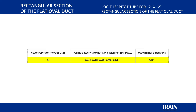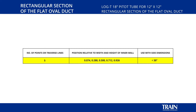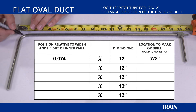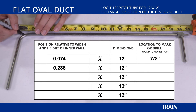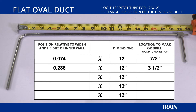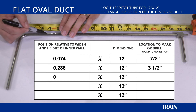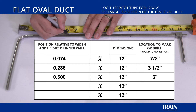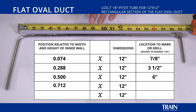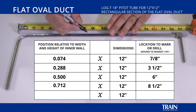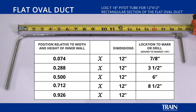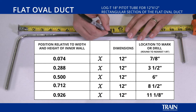The first point to mark for a 12 inch duct is 0.074 times 12 inches, which results in seven eighths on the pitot tube. The second factor is 0.288, which results in three and one half on the pitot tube. The third factor is 0.50 multiplied by 12 inches, giving us six inches on the pitot tube. The fourth factor, 0.712, again multiplied by 12 inches, gives us eight and a half on the pitot tube. And finally, the last factor is 0.926, again multiplied by 12 inches, results in 11 and one eighth on the pitot tube.